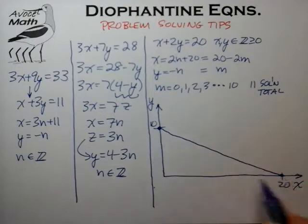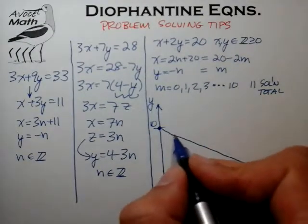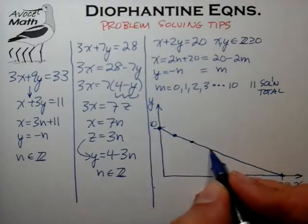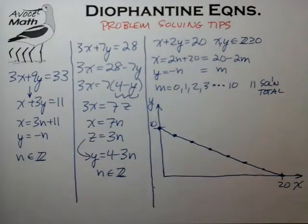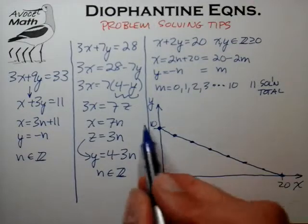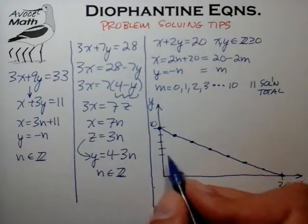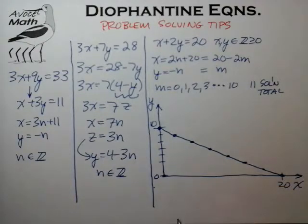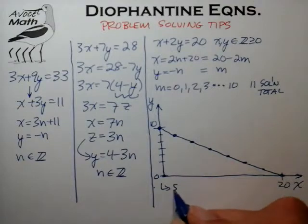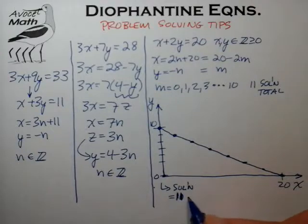There are solution points at these axes, and the problem is essentially asking us to find the lattice points along this line. When you examine it in graphical form, these lattice points are formed along every integer value along the y-axis all the way down to 0, and you can quickly convince yourself that the total number of solutions equals 11 in total.